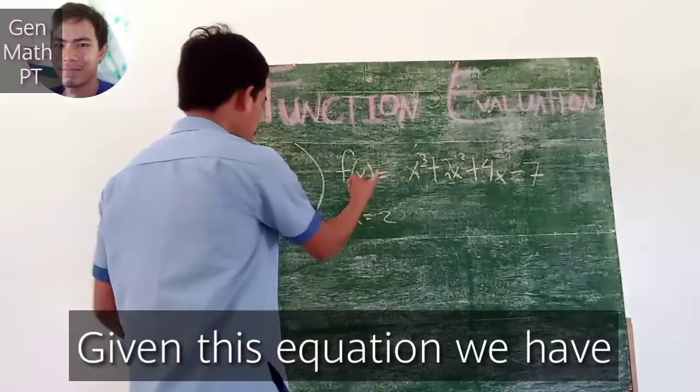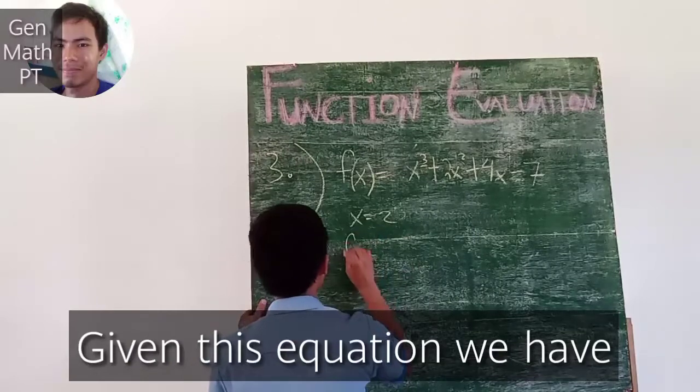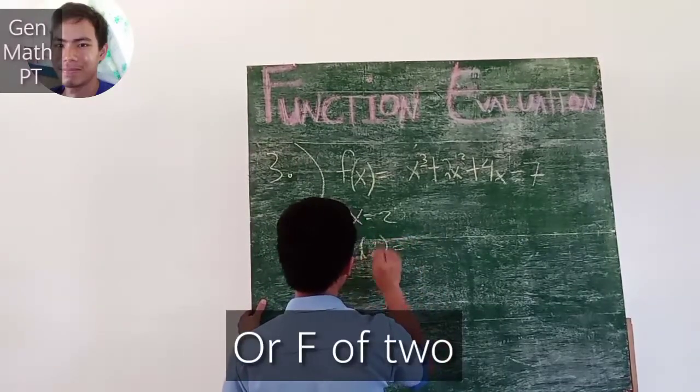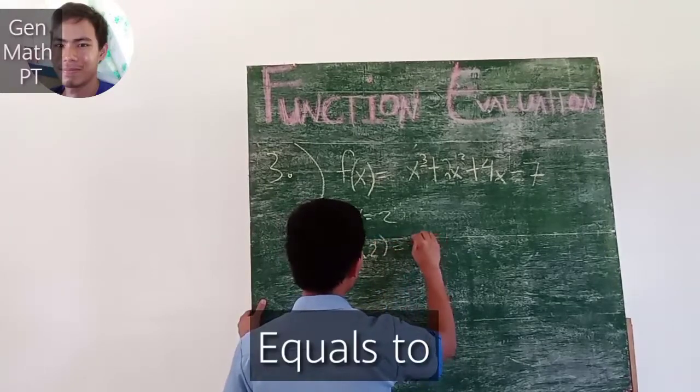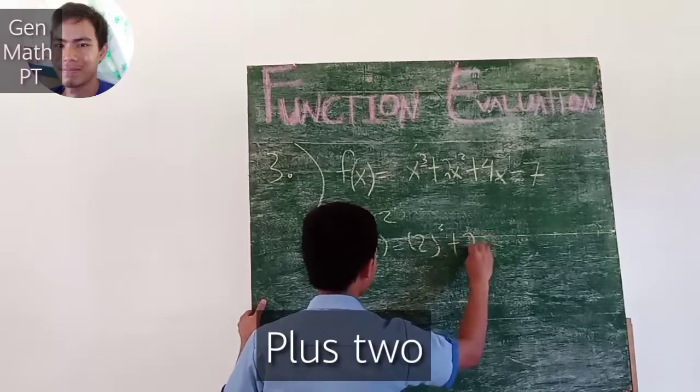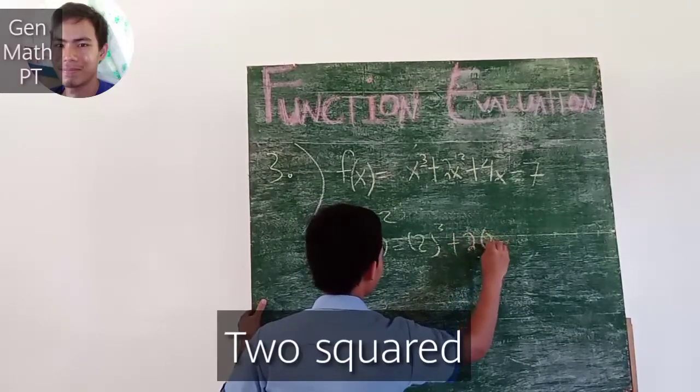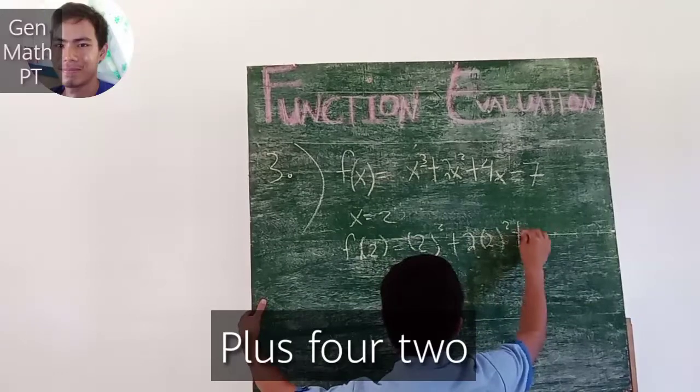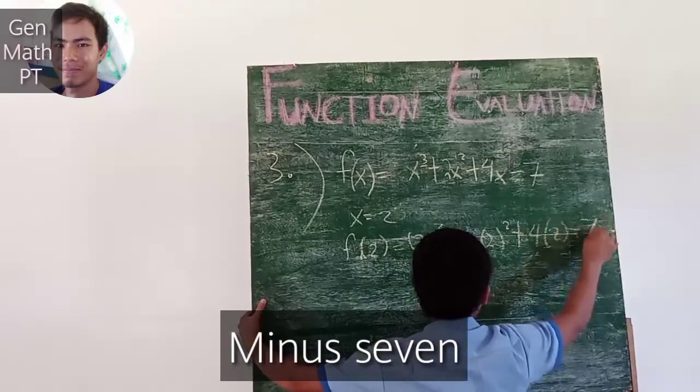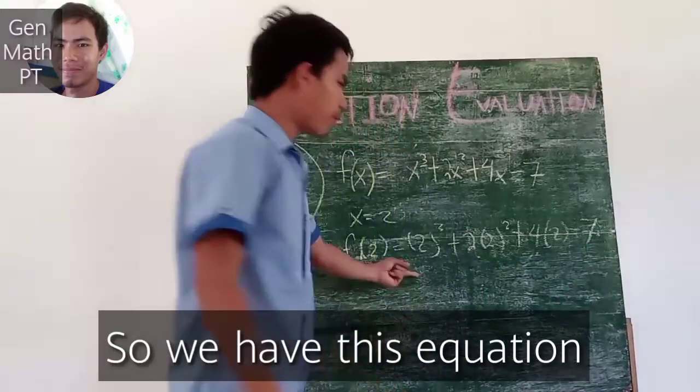Giving this equation, we have f of x equals to, or f of 2 equals 2 cubed plus 2 squared plus 4 times 2 minus 7. So we have this equation.